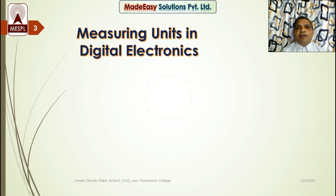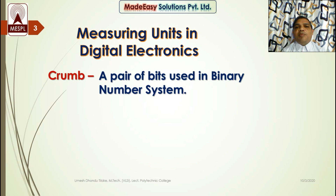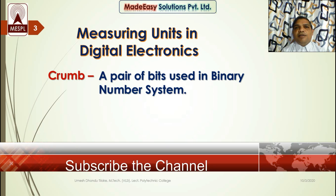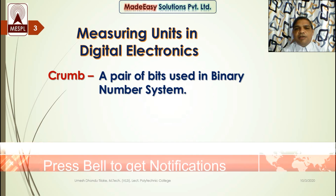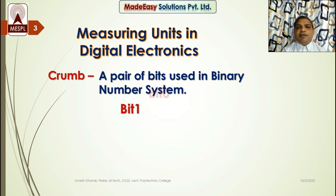In decimal, 10 power 1 is 10, 10 power 2 is 100, 10 power 3 is 1000 — that is kilo, like kilometer means a thousand meters. Similarly, we have units in binary number system. After bit, the next unit is a crumb. A crumb is a pair of bits used in binary number system, meaning any two bits form a crumb. Since it is a pair, 2 power 2 equals four possible crumbs. Let us see bit one and bit zero — starting with bit one = 0 and bit zero = 0.